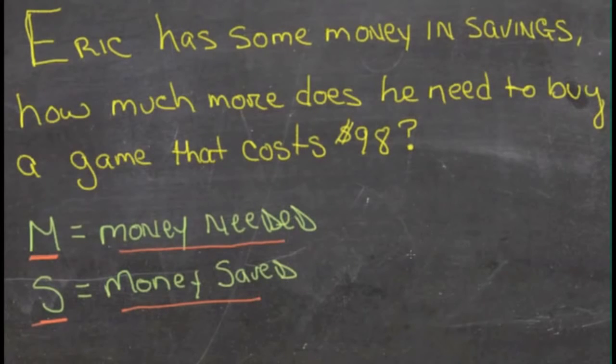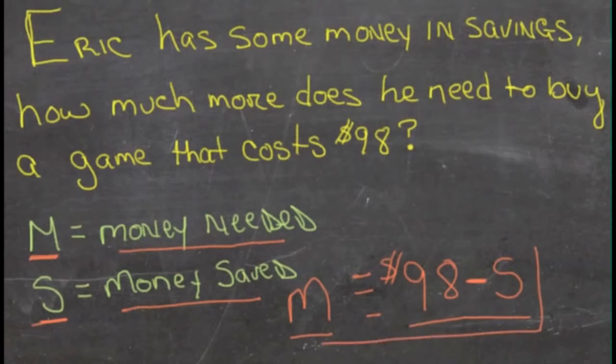Now, if the game costs $98, and we take away the amount of money that he's saved, S, that should give us the amount of money that he needs to save up, M. So, M is equal to 98 minus S, and that is the most concise version of our equation.